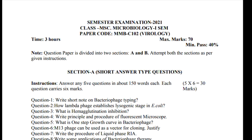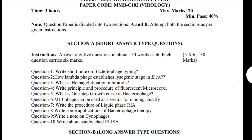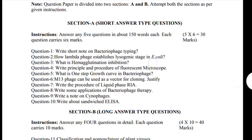This question paper is divided into two sections — Section A and Section B. Section A is of short answer type questions. There are total 10 questions in Section A and you have to attempt only five. Each question carries six marks.